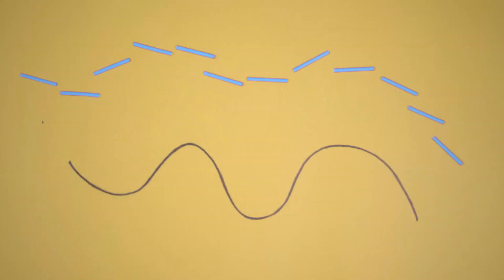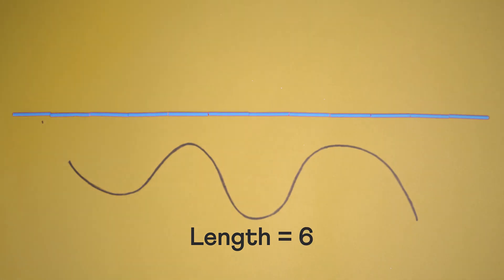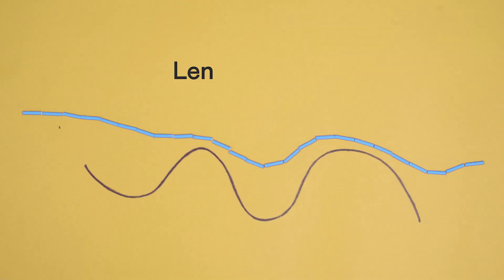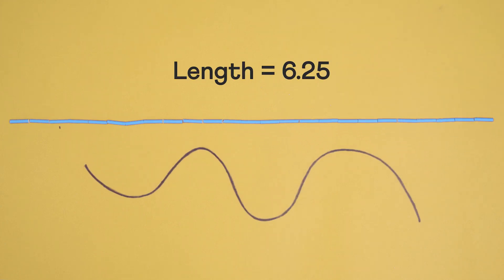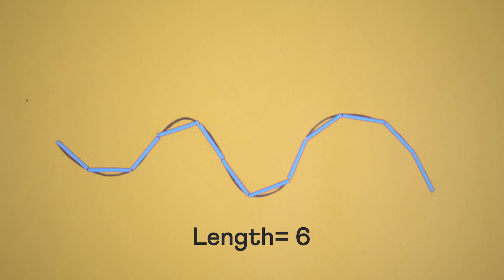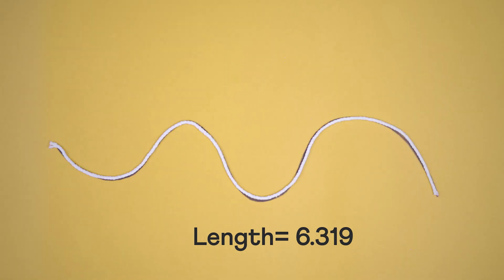First, let's see how we measure any curve. Take this curve — we can draw small lines along it and add them all up. If we make the lines shorter, they'll represent the curve more closely and we'll get a more accurate measure. Or we could use a thread, which is equivalent to drawing extremely small lines.